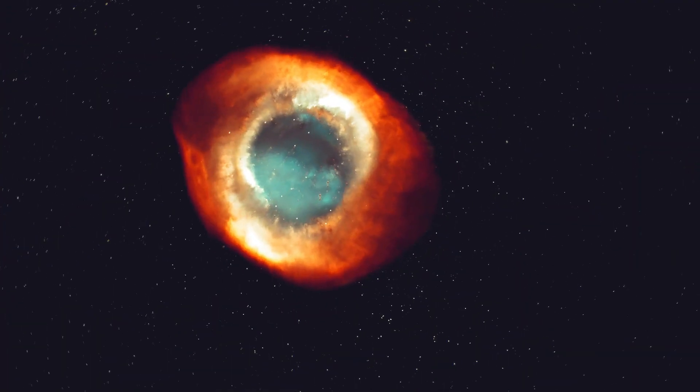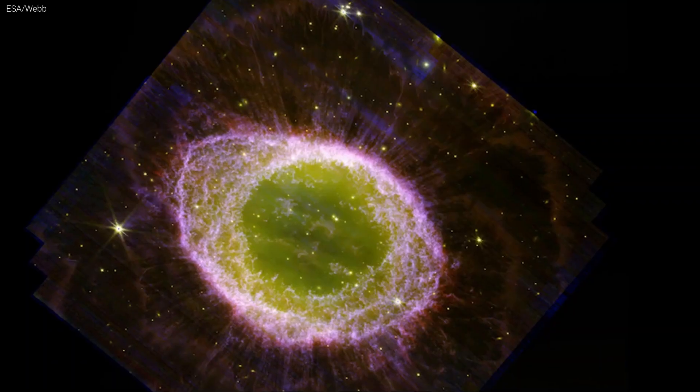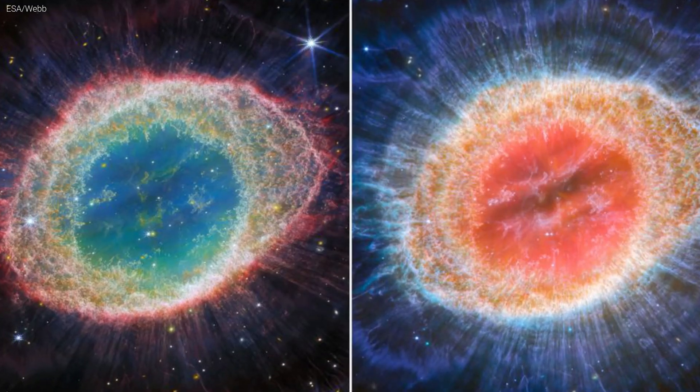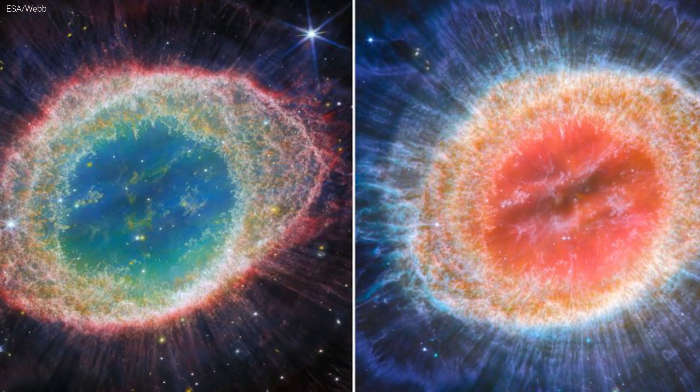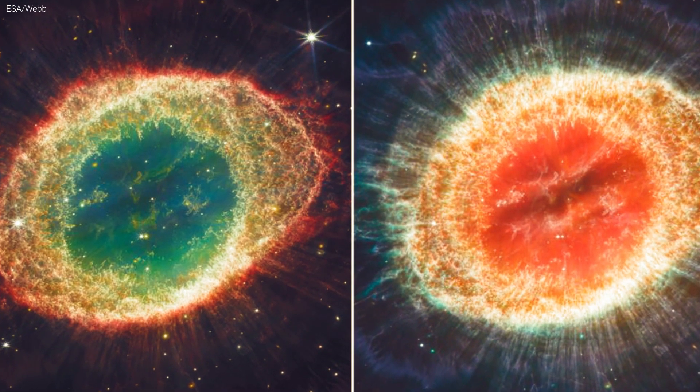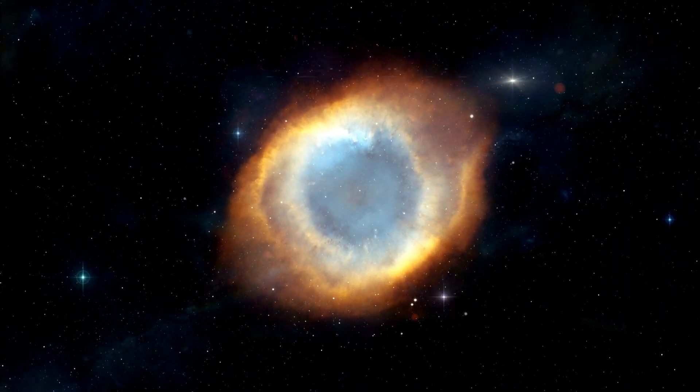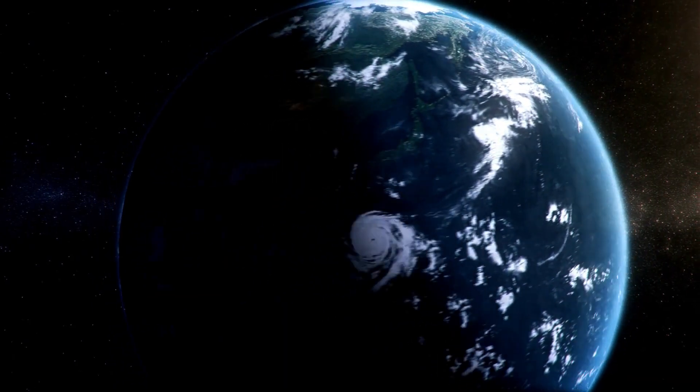"When we first saw the images, we were stunned by the amount of detail in them," Roger Wesson from Cardiff University shared with a sense of wonder. The images offer an intricate revelation: the nebula's luminous ring, a cosmic halo composed of around 20,000 dense molecular hydrogen gas clumps, each comparable in mass to our own Earth.